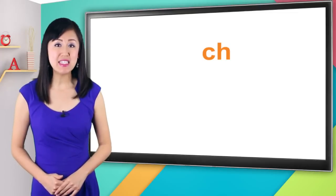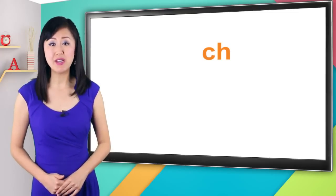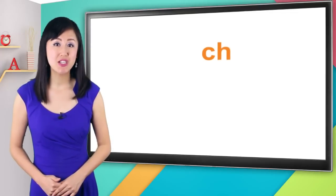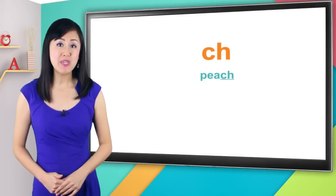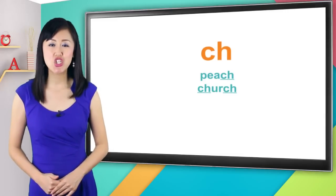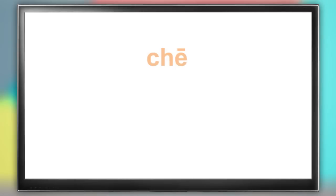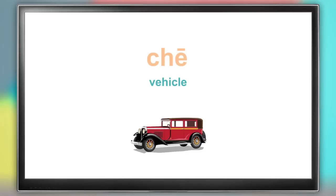Next, we have the ch initial, which is pronounced ch. It sounds just like the ch in the word peach or church. Previously, we learned the word for vehicle, which is chē. Say it with me. Chē.